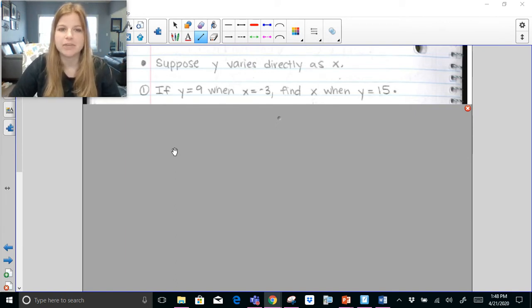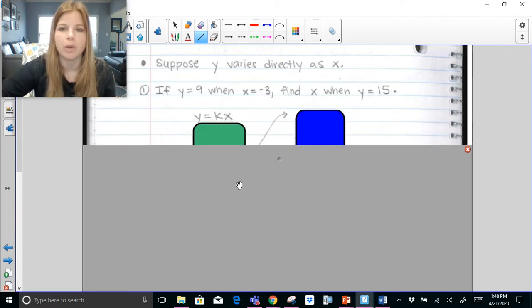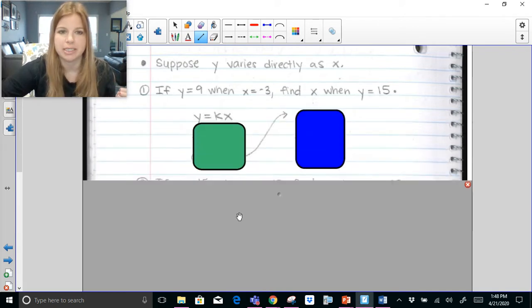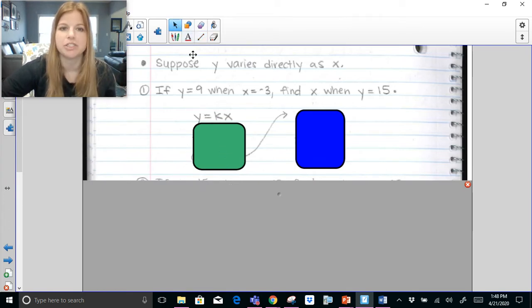First one, it says if y equals 9 when x equals negative 3, find x when y equals 15. So here's what we need to be able to do. We need to be able to figure out what the actual equation is. So we use the formula of y equals kx because that's what a direct variation is.